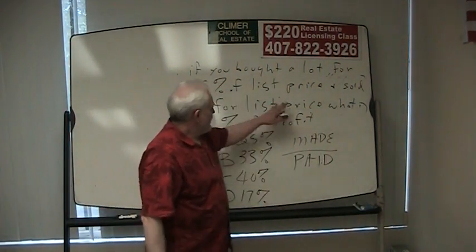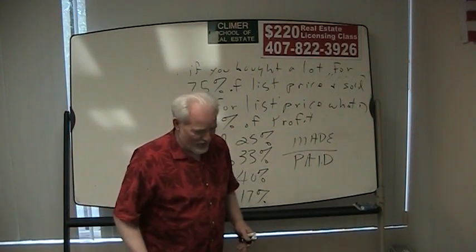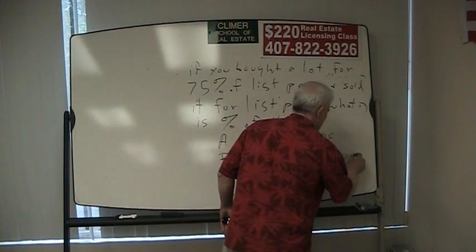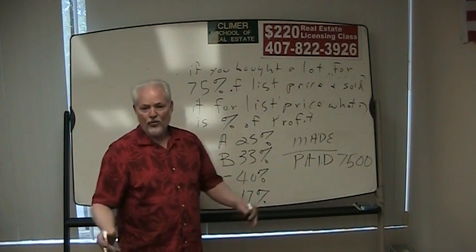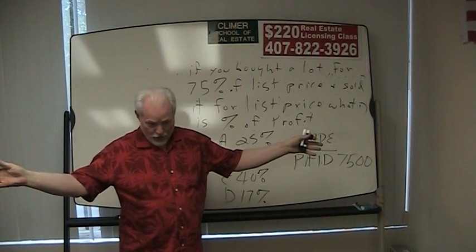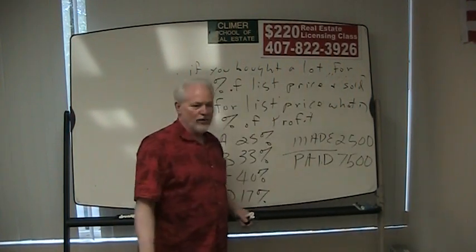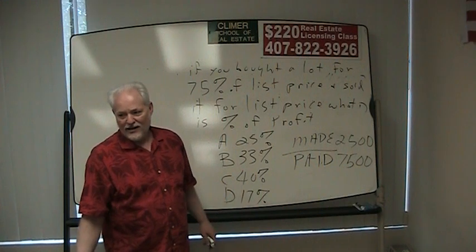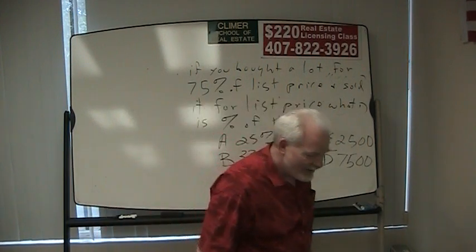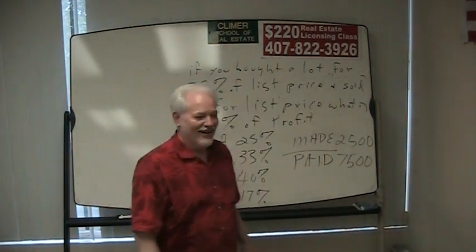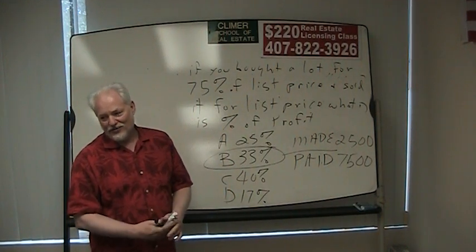List price is $10,000. So what are we paying? $7,500 — we're paying $7,500. Then we're turning around and selling it for $10,000, so we are making $2,500. Put that in the calculator — the calculator says 33%. That's a 33% profit.